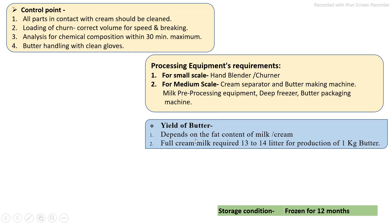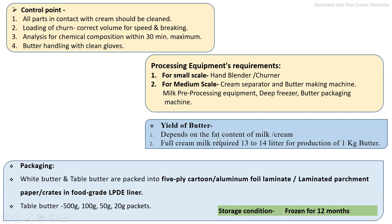The yield of butter depends on the initial fat percentage of the milk. For production of 1 kg of butter using full cream milk, at least 13 to 40 liters of milk are required depending on its fat content. Various types of packaging systems are available for the butter manufacturing process.